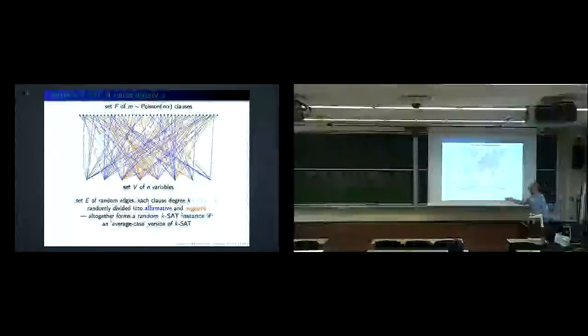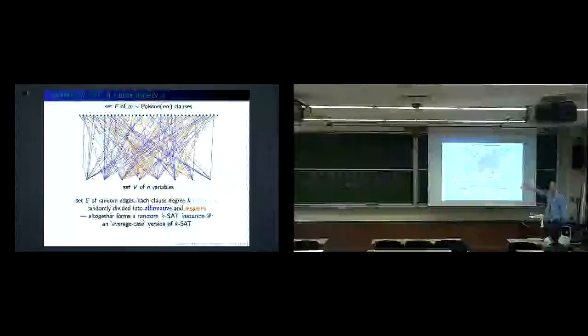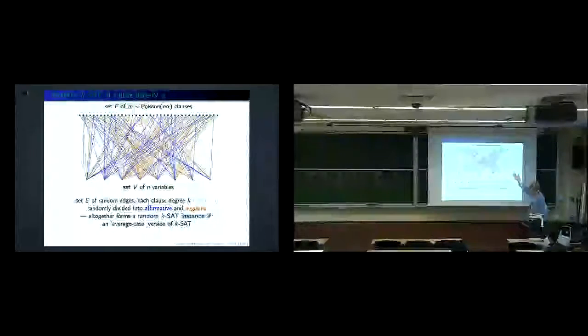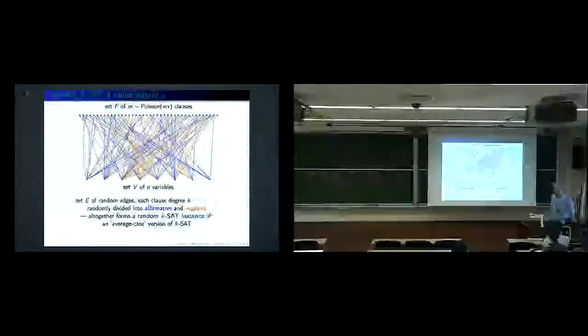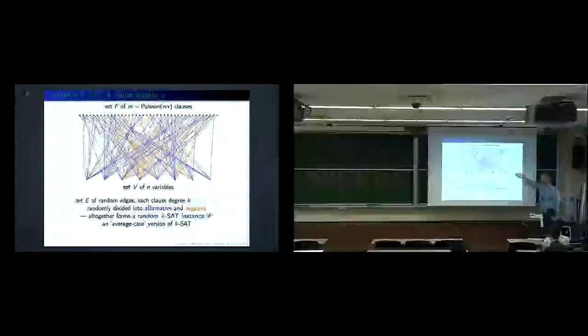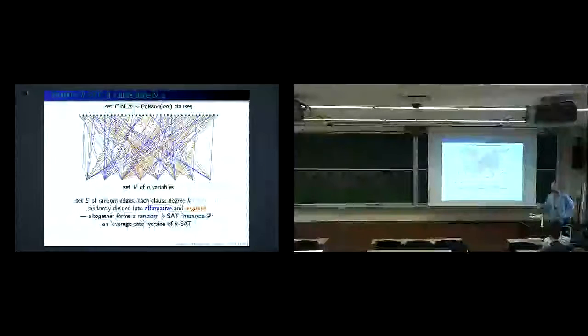This forms a K-SAT instance, and you are studying the average case version of K-SAT. K is specified, alpha is specified as the ratio between clauses and variables, and you ask: at large N, what is the probability that the randomly constructed graph has a satisfying assignment?